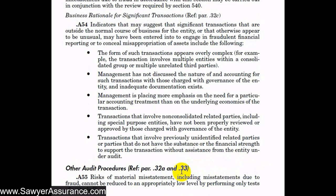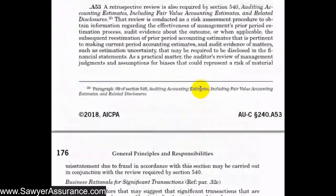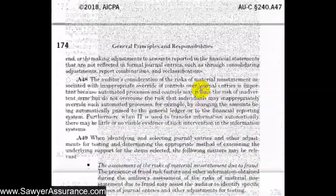The risk of material misstatement due to fraud cannot be reduced to an appropriately low level by performing only tests of controls, because throughout this entire section we have discussed the risk of management override of controls. Even if we have strong controls at the financial statement and assertion level, there is always the risk that management can override those controls. That is why we must go through all of these steps to assess the risk of management override of controls — there is no way to reduce the risk to an appropriately low level through tests of controls alone.